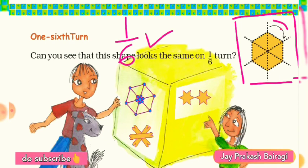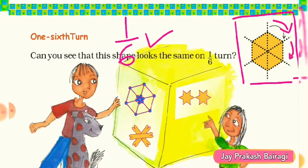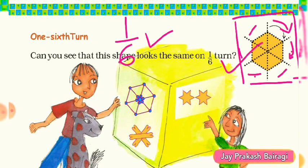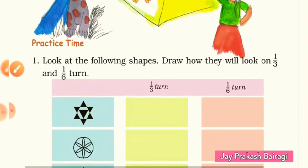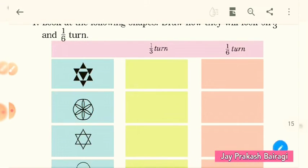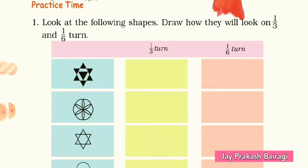In the first turn to the right side, as you can see in the arrow, that is its one sixth turn. If you go another turn, it will be its second one sixth turn. In this way, you can see one, two, three, four, five, and six — in total six turns. So each part is one sixth turn, and this hexagon looks the same in every one sixth turn. Remember this.